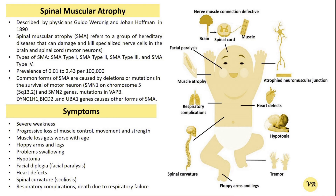Spinal Muscular Atrophy was first described in 1891 by German neurologist Werdnig, and later in 1893 by Johann Hoffmann. In 1891, Werdnig published his observation of two brothers with muscle weakness and reduced muscle tone. He described the clinical features of what is now known as the severe form of SMA, characterized by early onset and very rapid progression.